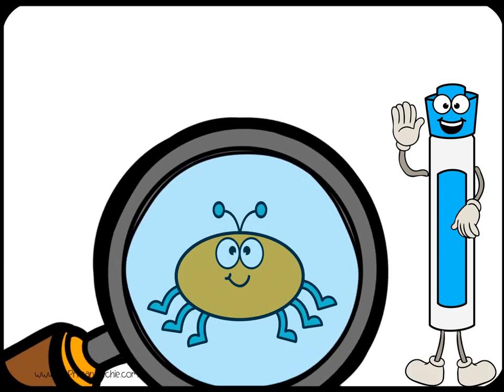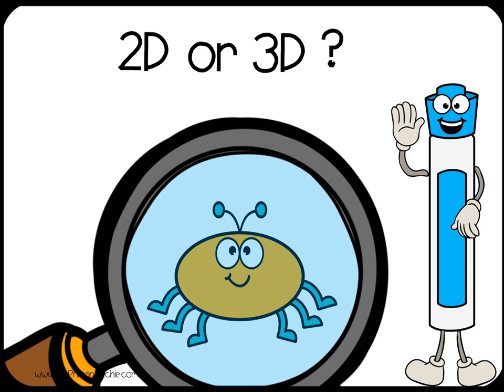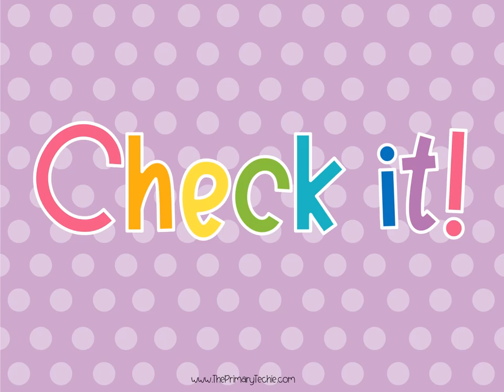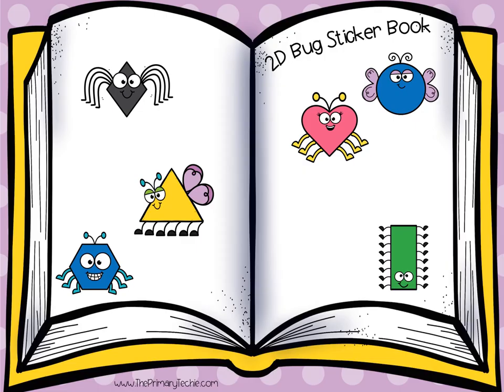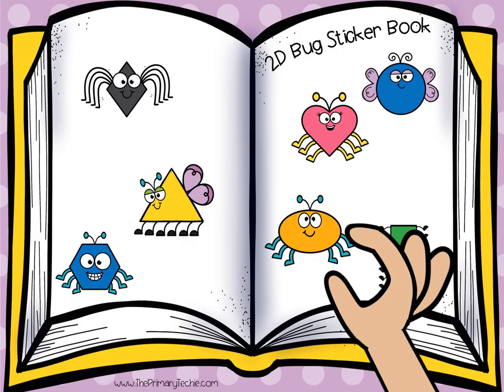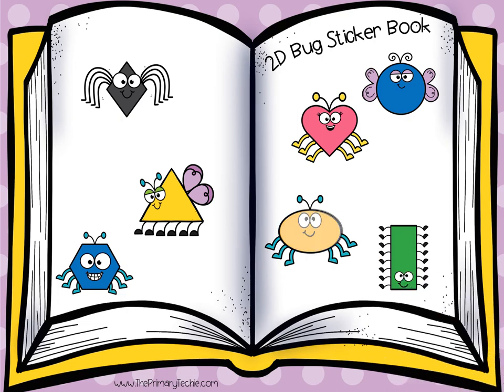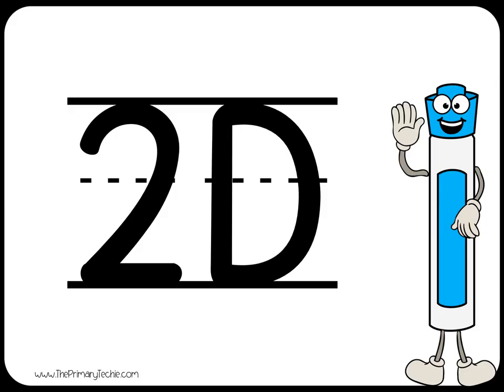Oval. Is it a flat or solid figure? Write 2D if it is flat, or write 3D if it is solid. Check it. 2D Shapes — Oval. Erase it.